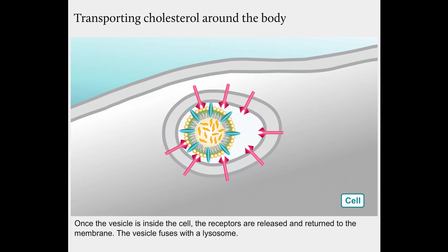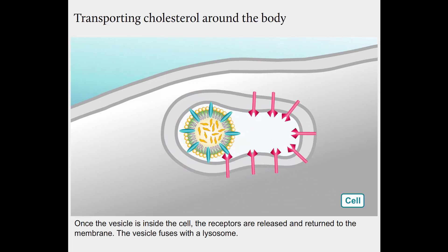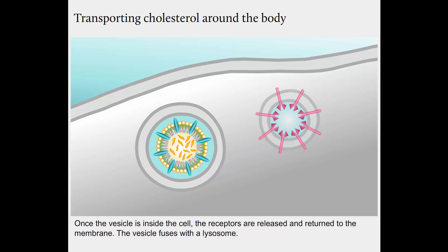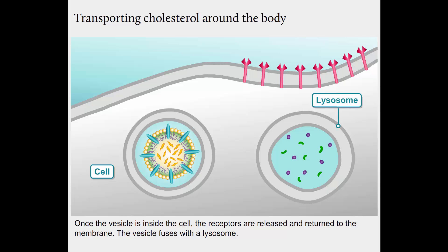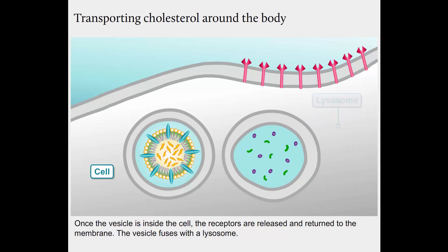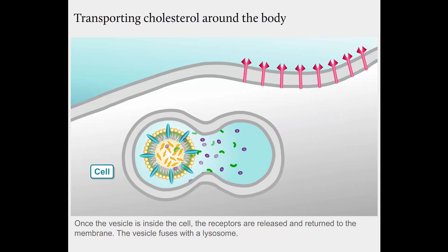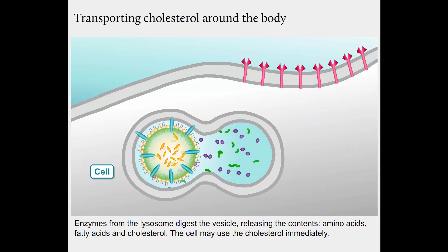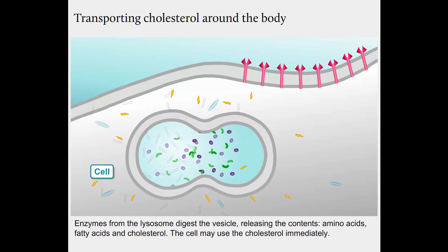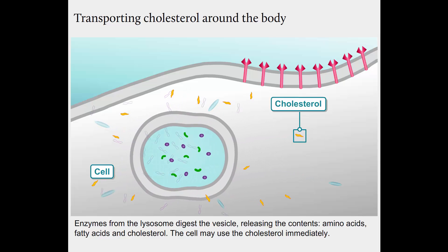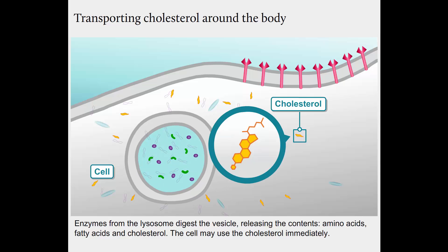Once the vesicle is inside the cell, the receptors are released and returned to the membrane. The vesicle fuses with a lysosome. Enzymes from the lysosome digest the vesicle, releasing the contents: amino acids, fatty acids, and cholesterol. The cell may use the cholesterol immediately.